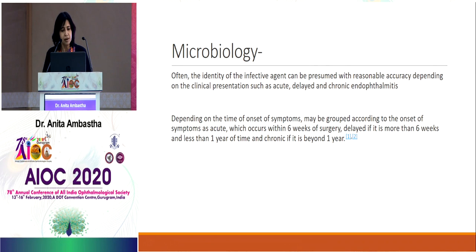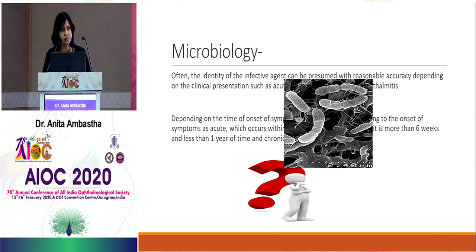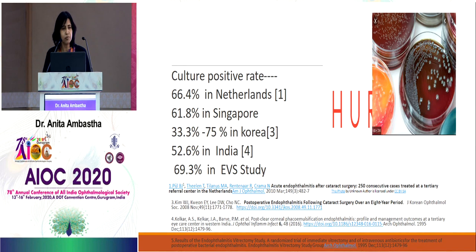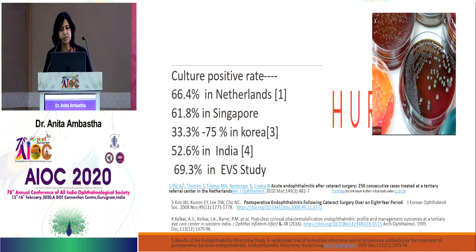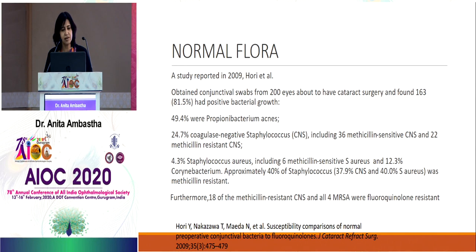The pathogen can be identified by the presentation — whether it's acute, delayed, or chronic — giving us an idea about the organism involved. Direct evidence comes through vitreous aspirate or aqueous humor cultures, though a positive culture is a big achievement. In the EVS study, the culture positive rate was 69.3%, and in one Indian study it was 52.6%, so we largely rely on what the literature tells us.